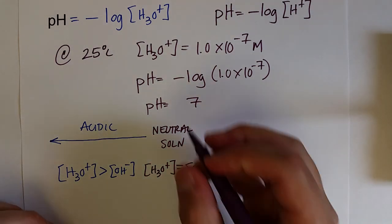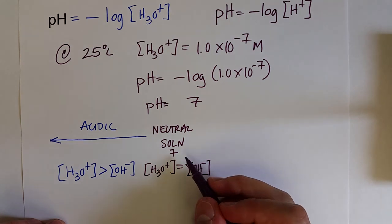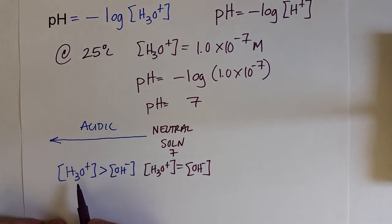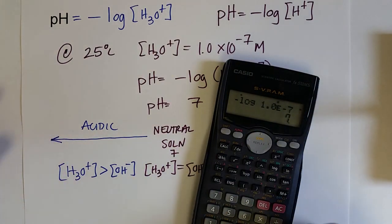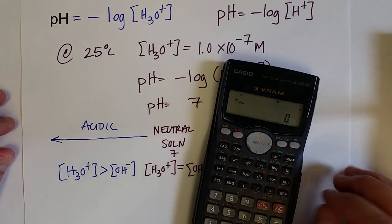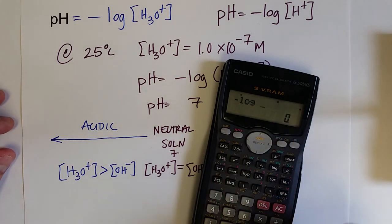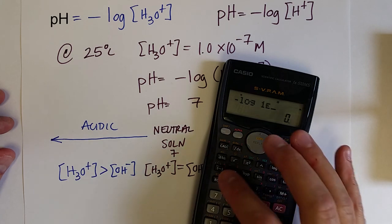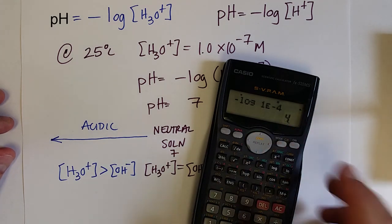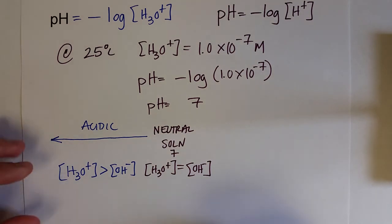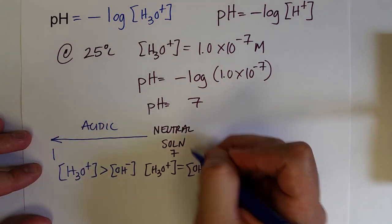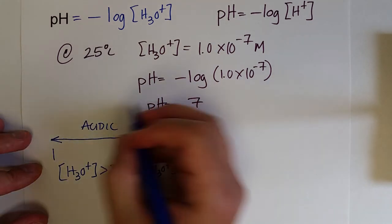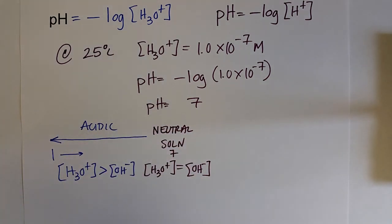If a neutral solution is pH 7, the pH will decrease as the hydronium ion concentration increases, because we're taking the negative log of that value. For example, if the concentration increased to 1.0×10⁻⁴, the negative log of 1×10⁻⁴ equals 4. So as the solution becomes more acidic, the pH actually decreases. Generally the acidic range goes from 0 to 7, though acidic pHs can even go negative with really high concentrations.